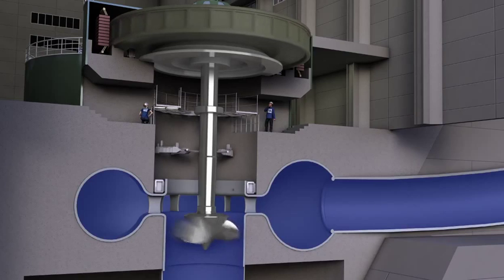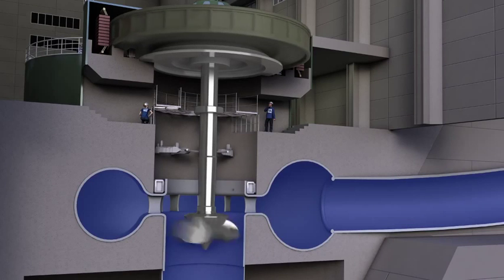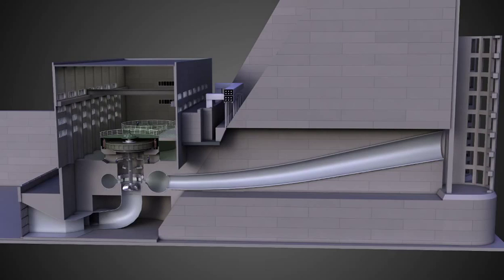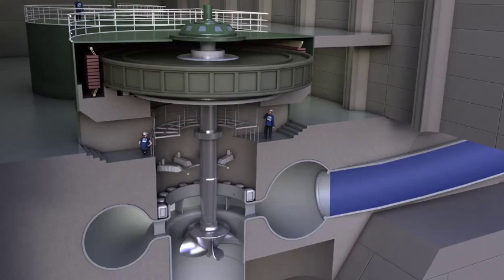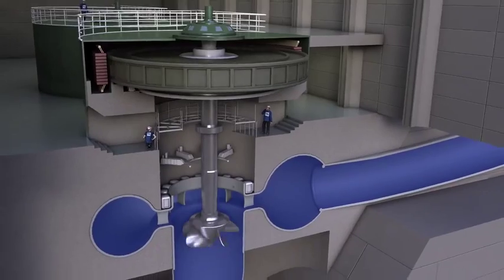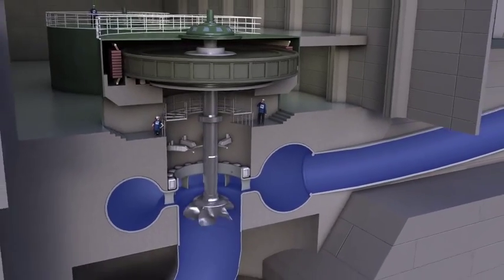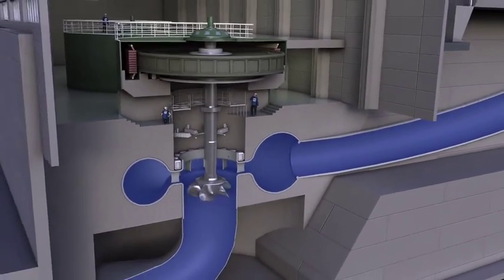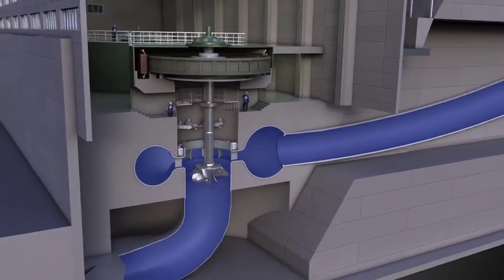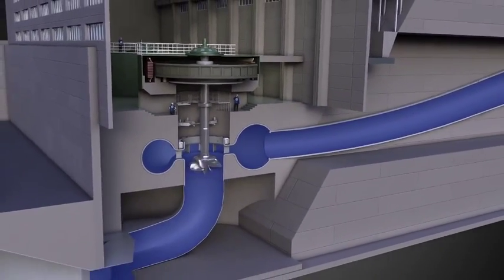a type of water wheel that converts the water's energy into mechanical power, which is located at the end of the penstock. When the turbine spins, it turns a metal shaft which goes up to an electrical generator.